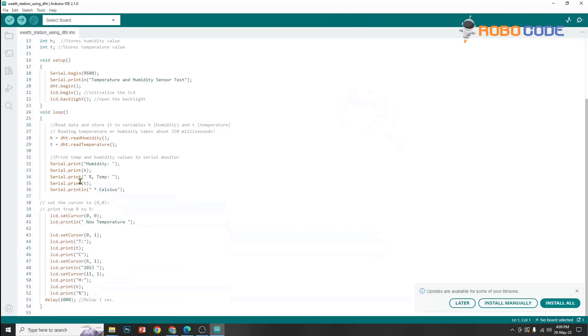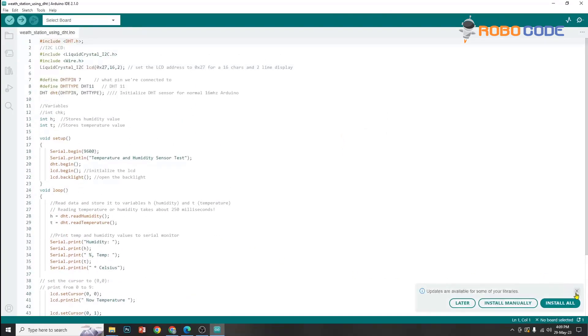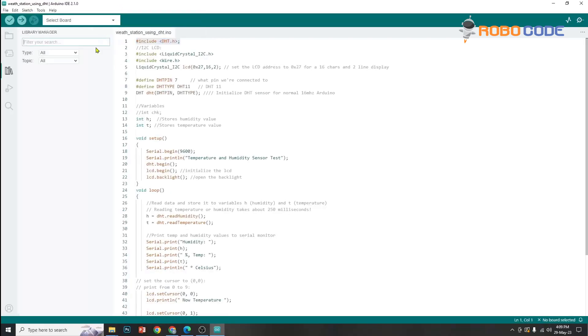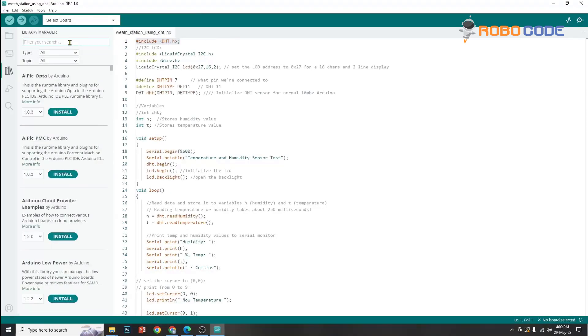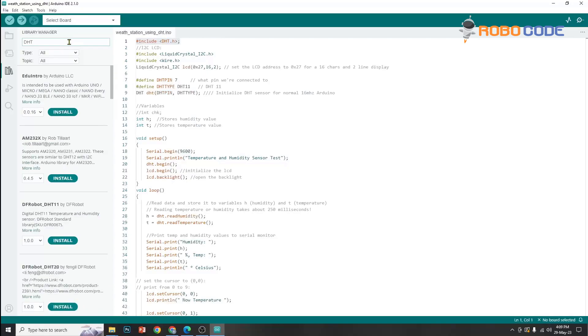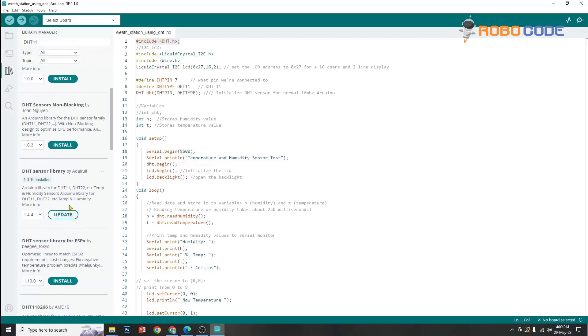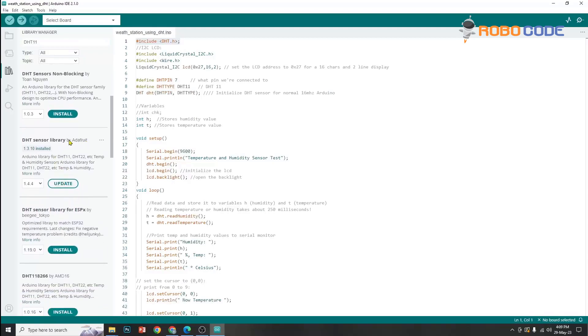Once that is done, we need to install some dependencies, some libraries and modules. We will click Sketch and go inside Include Library and then click Manage Libraries. In that we will type DHT11 and then scroll down a little bit and we can see DHT sensor library.